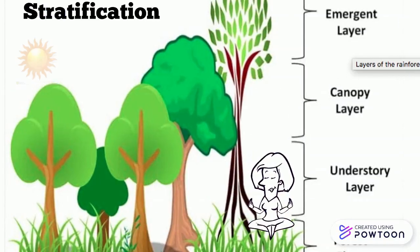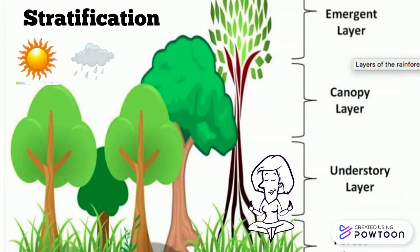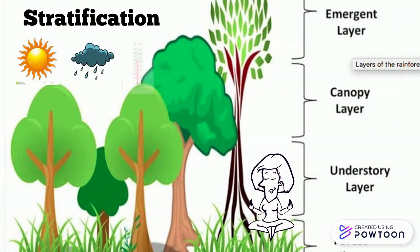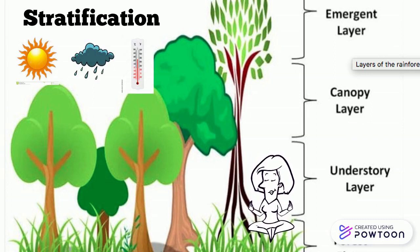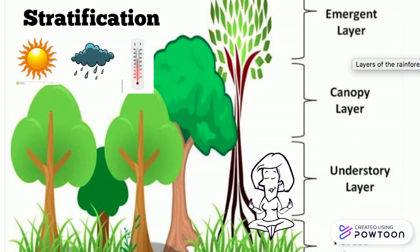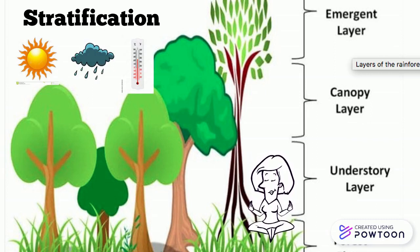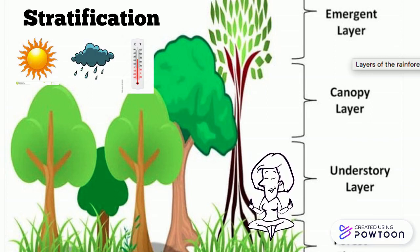Therefore, sunlight, rainfall, and constant temperature are the main factors of a tropical biome, and these factors allow the forest, just like the tropical rainforest, to grow with specific adaptations.